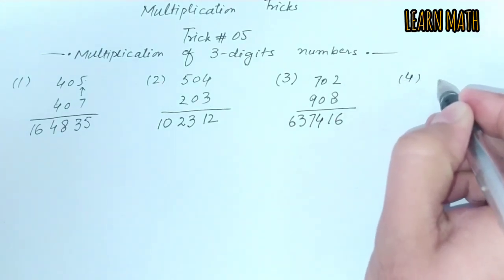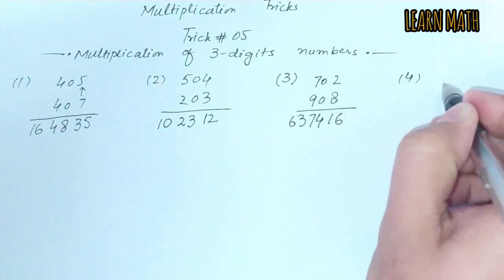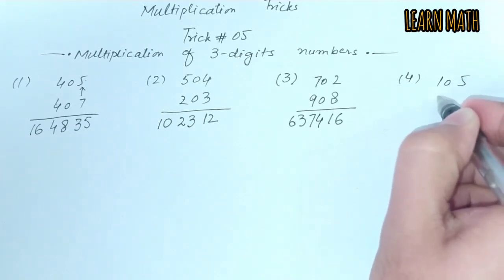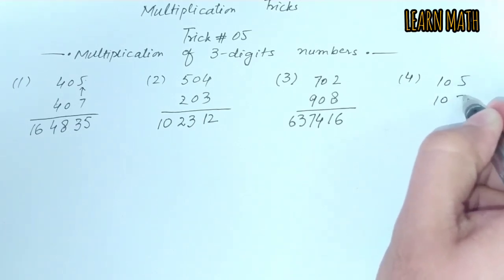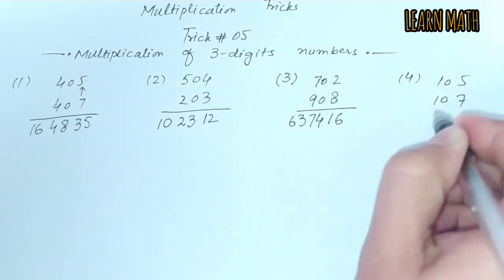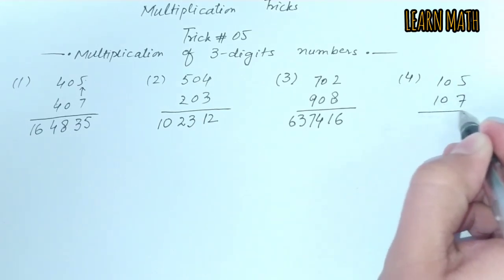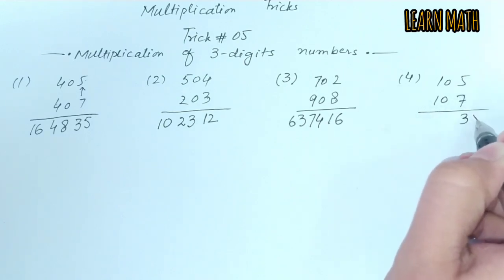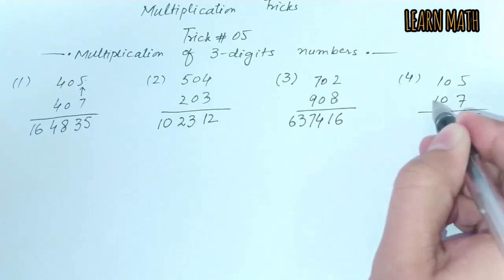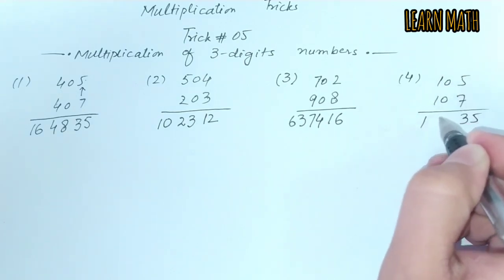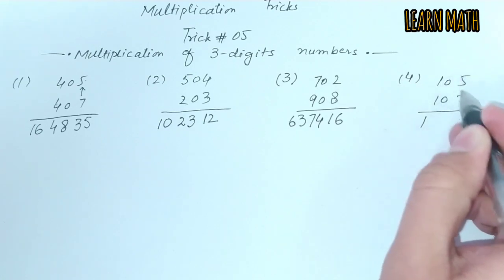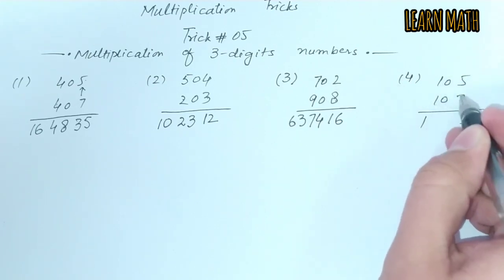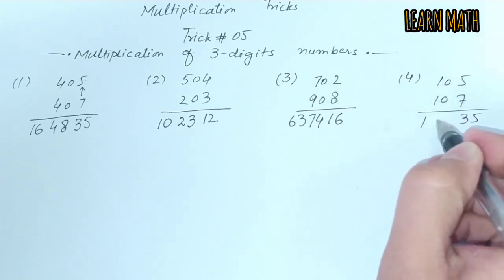In the fourth example we have 105 and 107. First we will multiply 7 into 5, which is 35, and then 1 into 7 is 7, and 1 into 5 is 5, plus 12. This is the answer.